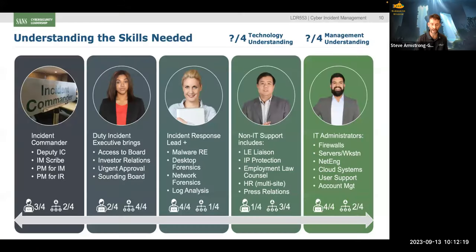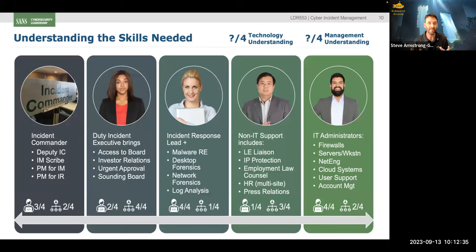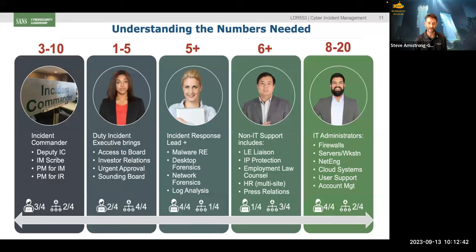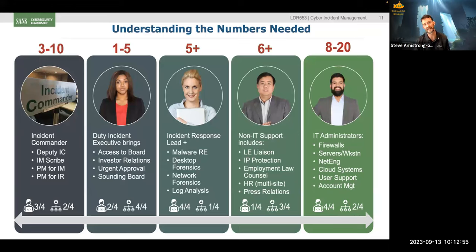People ask how many people they need. Looking at the LDR 553 course, the kind of skills needed in a multi-discipline team to handle a major incident — there are a lot. Between 26 and 46 people directly supporting: cloud administrators, desktop administrators, log reviewers, account resetters, system rebuilders. Getting those people together is great if you have that capacity, throwing them in a room to sort things out. But then they ask: where's the plan?